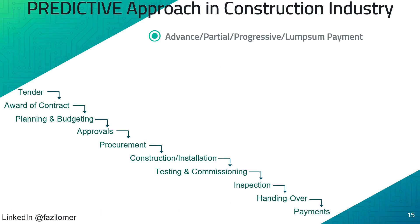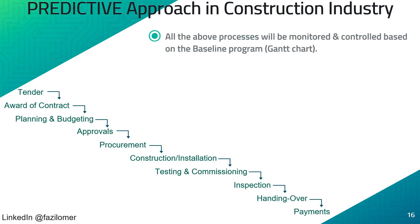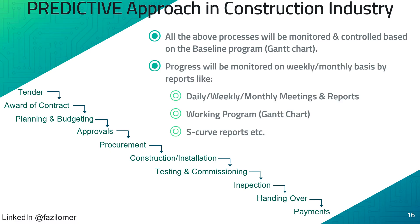Advance, partial, progressive, or lump sum payments shall be processed in line with contract conditions and BOQ. All the above processes will be monitored and controlled based on the baseline program. The project progress will be monitored on a weekly or monthly basis by reports like daily, weekly, or monthly reports, working programs, and S-curve reports.